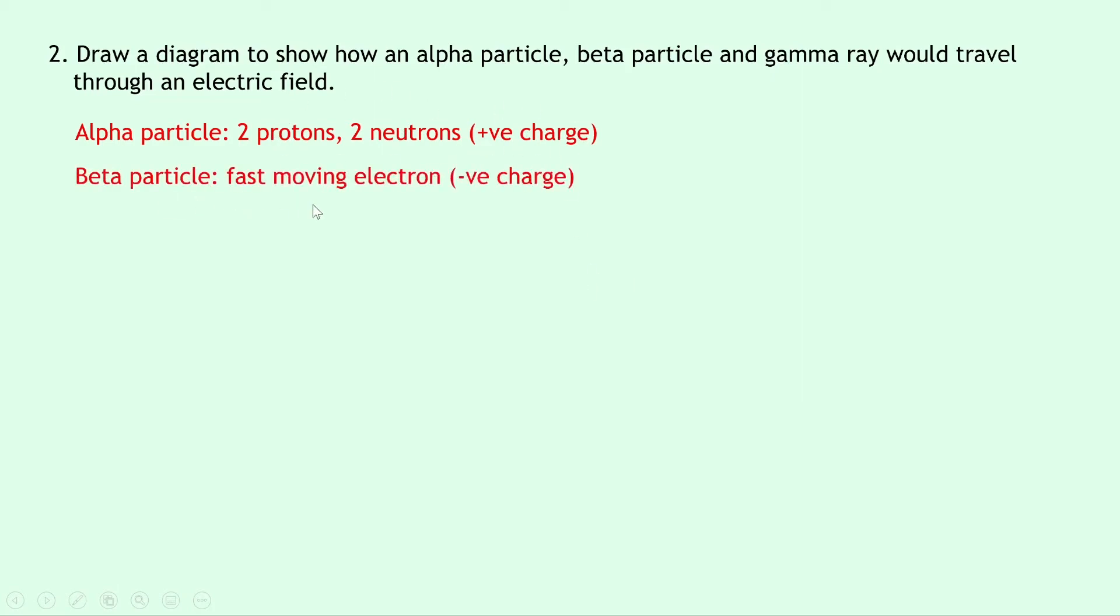Next the beta particle is a fast moving electron so if it's an electron that means it's negatively charged because electrons are negatively charged. And lastly the gamma ray is a high energy electromagnetic wave which has no charge.